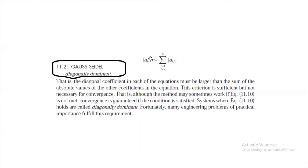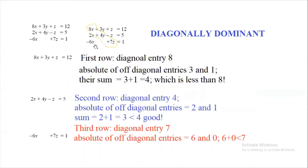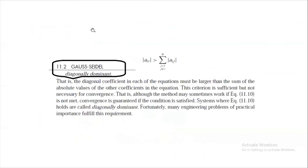Let us apply the diagonal dominance check to an example: 8x + 3y + z = 12, 2x + 4y − z = 5, −6x + 7z = 1. For the first row, the diagonal entry is 8 and the off-diagonal entries are 3 and 1. Since 3 + 1 = 4, which is less than 8, the condition A11 > |A12| + |A13| is satisfied.